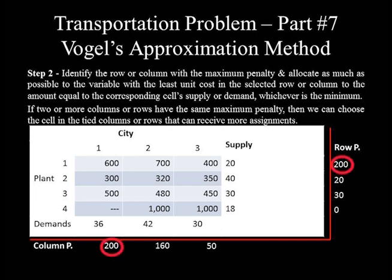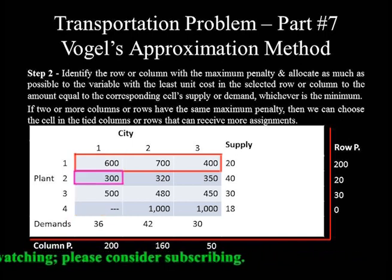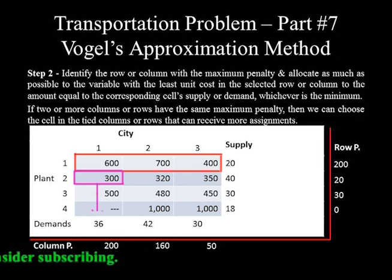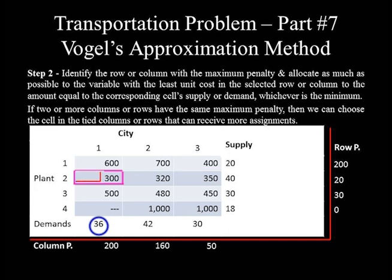In this case, the maximum penalty is 200, and row 1 and column 1 are tied. Comparing allocations: the least cost in column 1 is 300, with demand 36 and supply 40 — allocatable amount is 36. The least cost in row 1 is 400, with allocatable amount 20. Since 36 > 20, the cell at the intersection of row 2 and column 1 can receive more allocation. The amount allocated to this cell is 36. After this allocation we continue to Step 3.